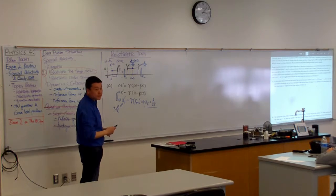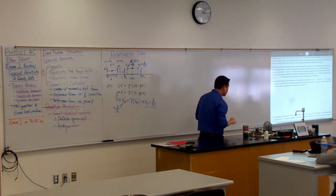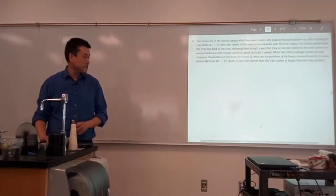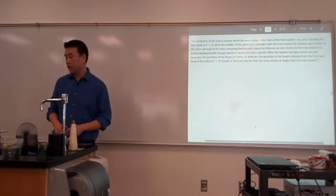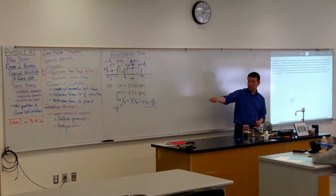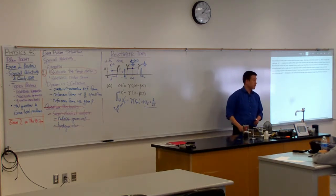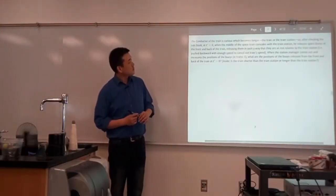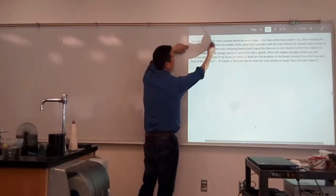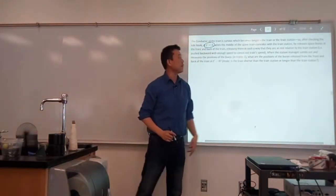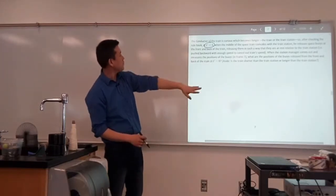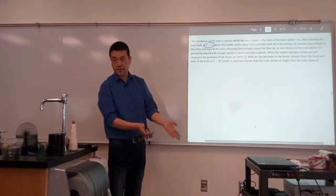All of this is good, so Part A is supposed to be easy — it fits your intuition. It's Part B where you have to be more careful. Part B is asking you to describe the situation not from the perspective of the train station, but from the perspective of the train. It says: at t prime equals zero, when the midpoint of the train coincides with the train station, examine the space-time coordinates of objects that are at rest relative to the train station.